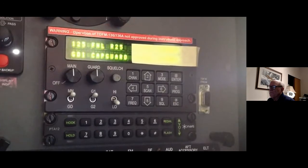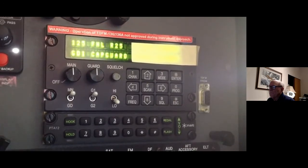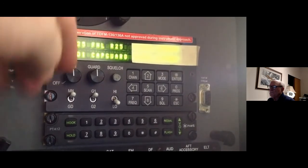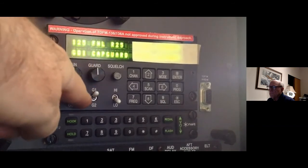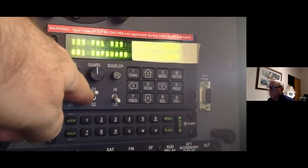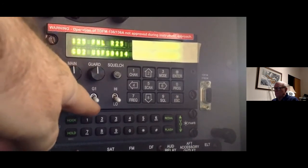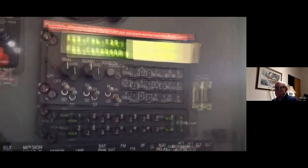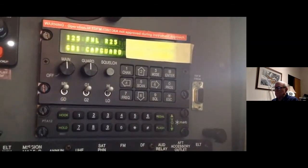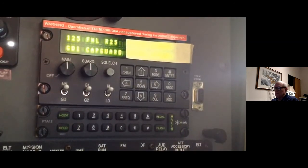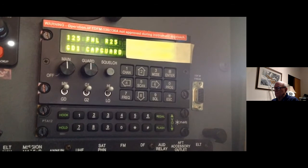You can also change the channel for the guard portion of the radio, or the bottom display. You only have two choices, guard 1 and guard 2, as determined by the switch under the guard volume control. As you flip the switch, that channel changes.